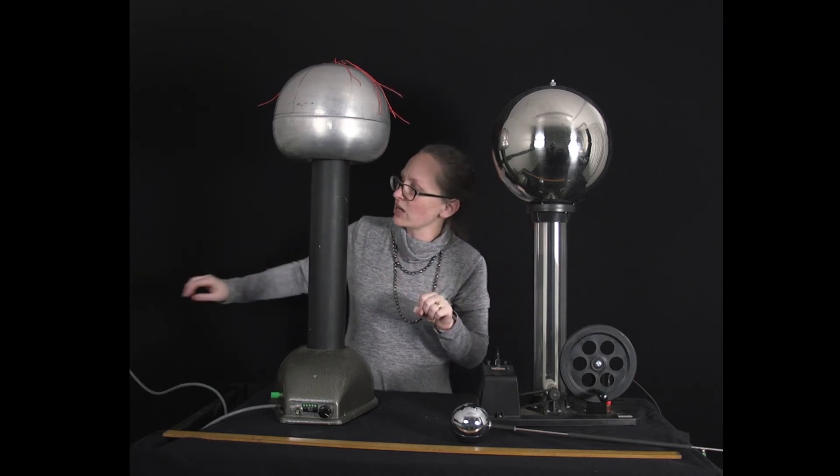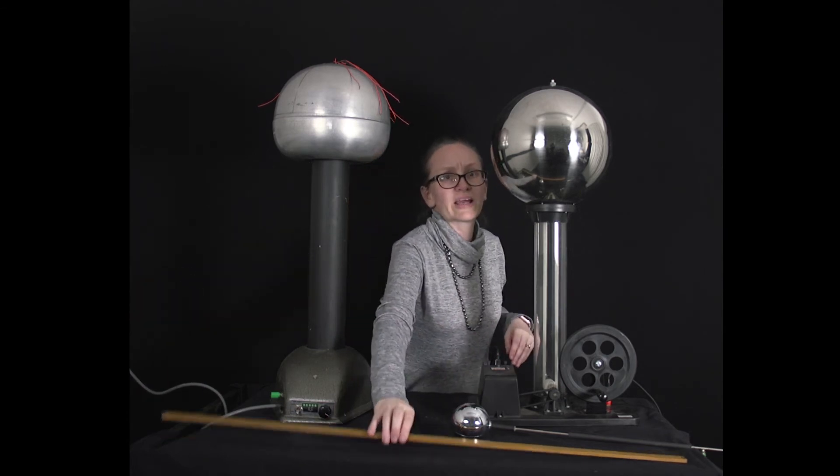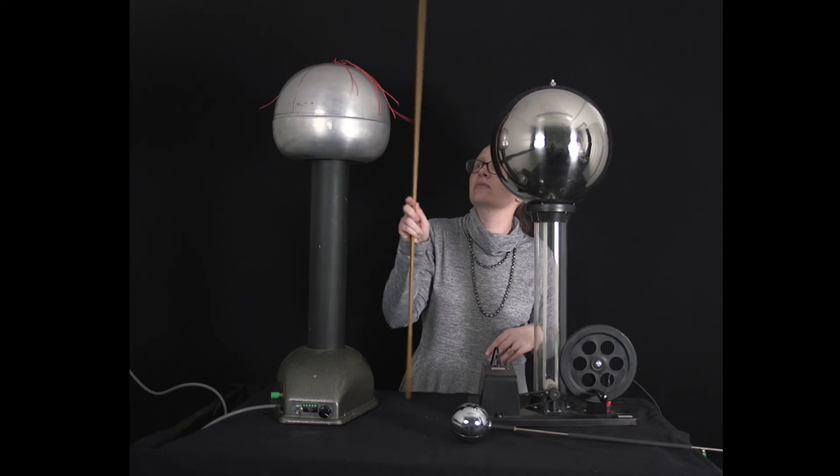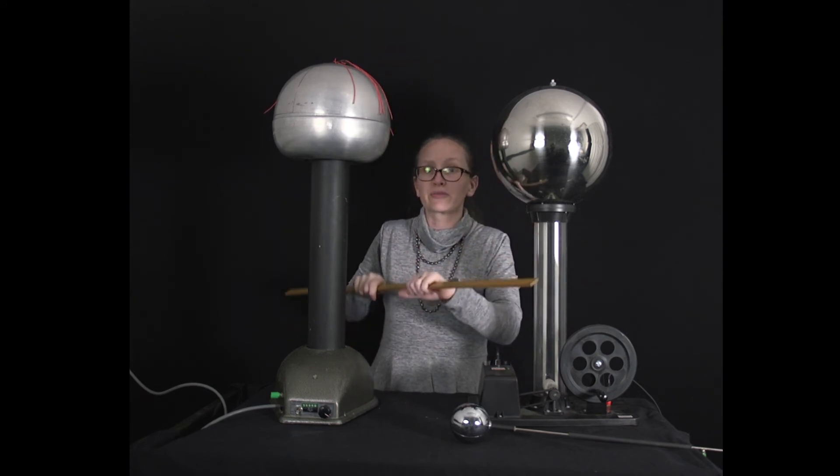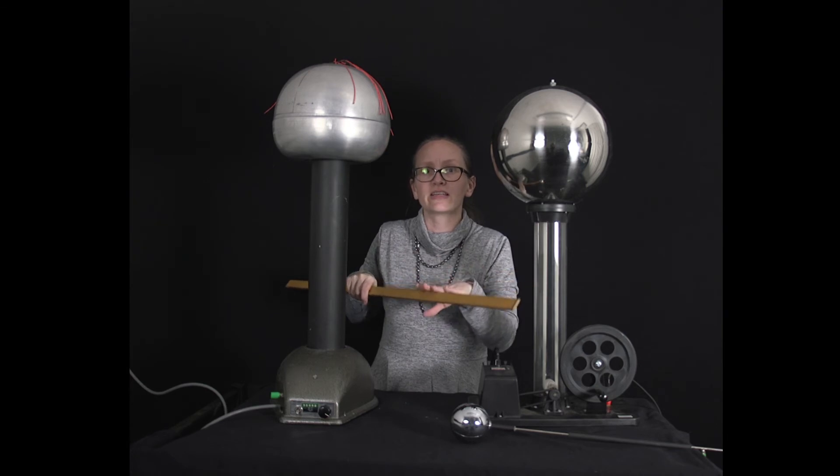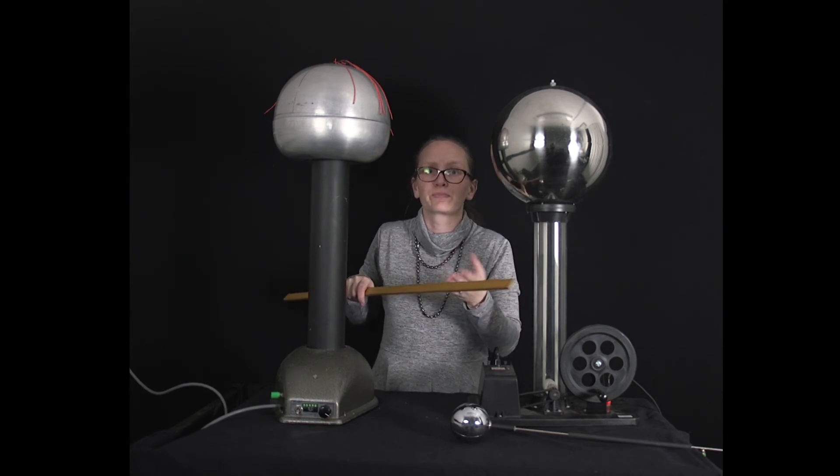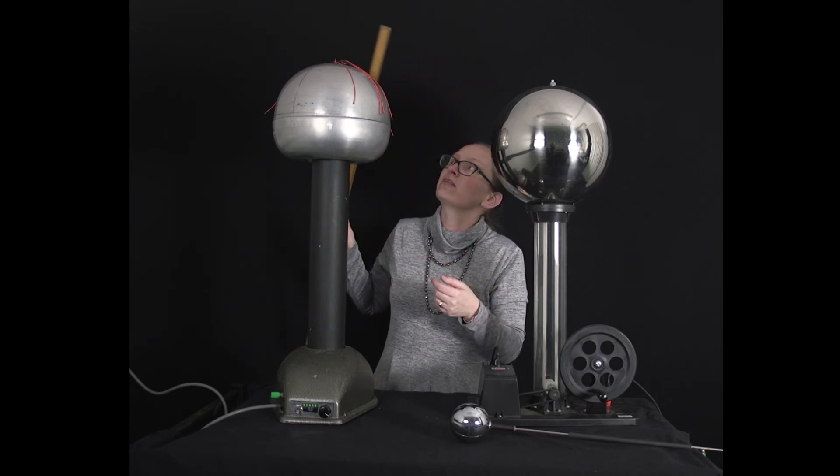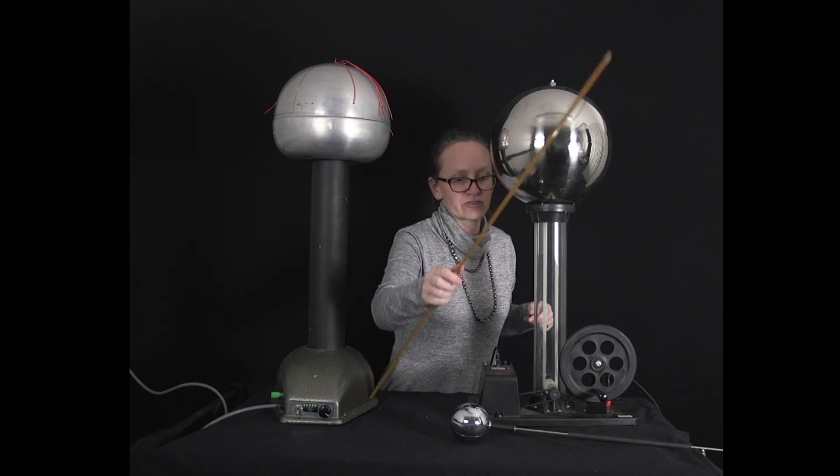When we're discharging a Van de Graaff generator we turn it off and then a way I like to do it is to touch it with a piece of wood. That's because wood is not an absolute perfect insulator—it is an insulator which means that electrons can't flow through it quickly, but they do flow through it slowly. So if we discharge this slowly with a piece of wood, then it stops us getting an electric shock.